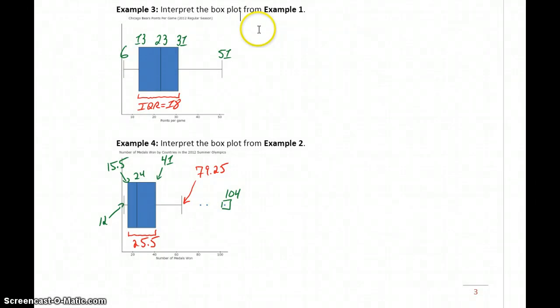Let's go ahead and generate some interpretations for these different results. Thinking about interpreting shape, center, spread, and outliers. In this case, when we're looking at our graph of Chicago Bears' points per game,